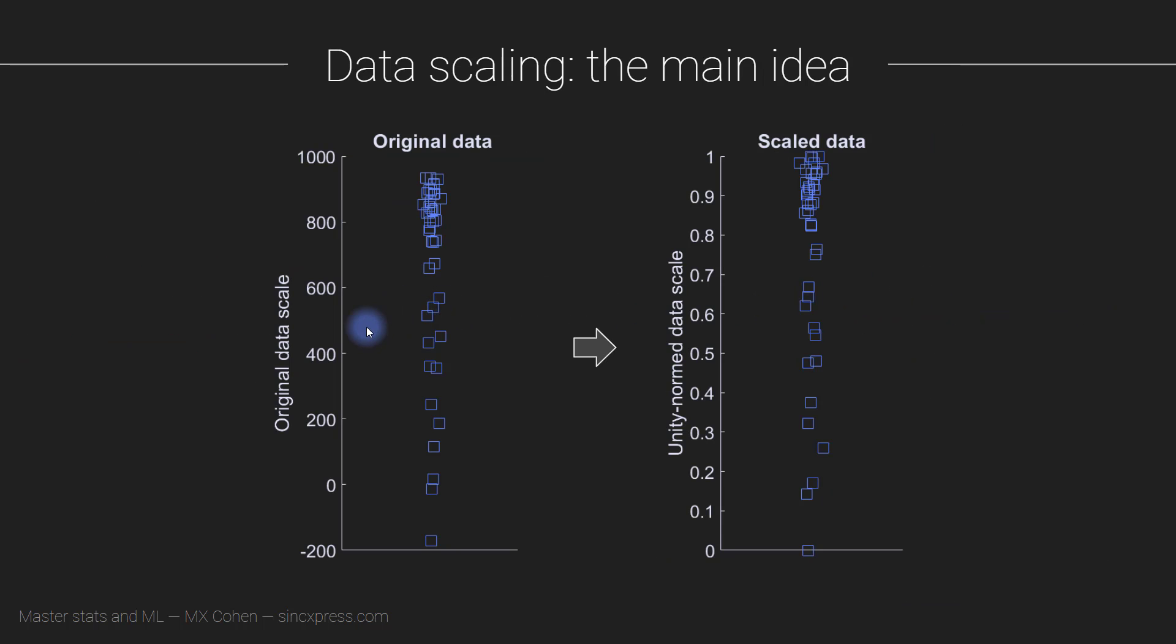Here you see an example. These are data plotted in the original data units. And they go from almost minus 200 to around 950 or so. And then I normalize the data. I scaled the data. Now, what you can see is that the relationships across the data points are basically the same. So there's a lot of clustering up here. The data points are more sparse when we get further down. But now I've scaled the data so that the smallest data value has a value of 0 and the largest data value has a value of 1.